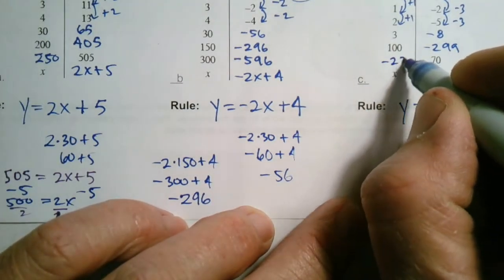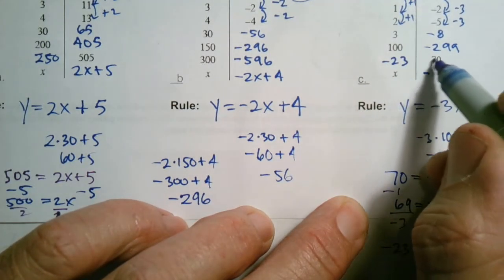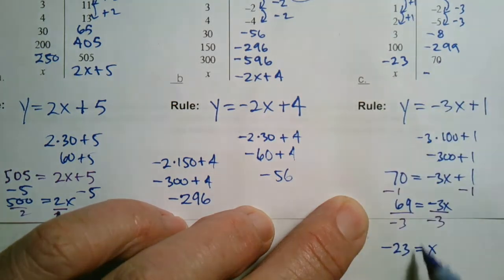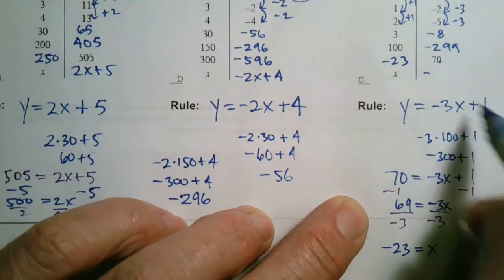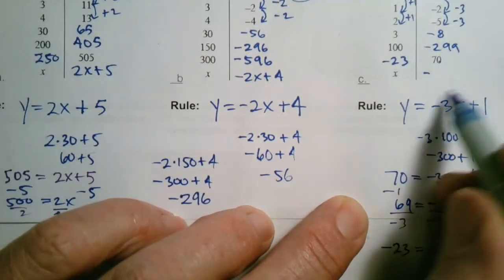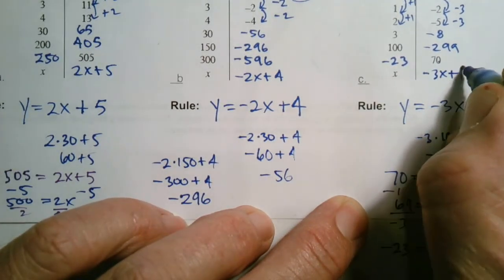So that's my x. So I'm going to put negative 23 over here because that's what I had for 70 for y, negative 23 for the x. And the last thing is, when I put in x, I get that expression, negative 3x plus 1.